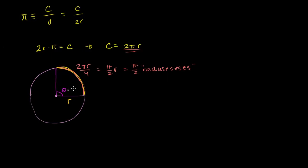So over here, theta is pi over 2 radians. And when you're measuring angles in radians, you're really saying that angle is subtended by an arc that has a length of how many radii.